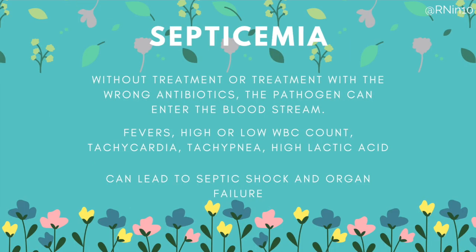Without treatment or with the wrong antibiotics, the infection will spread and can eventually enter the bloodstream. Once pathogens are in the bloodstream, they can go anywhere blood can go — literally your entire body. This leads to full-body manifestations like fever and chills, hemodynamic changes like tachycardia, and elevated white blood cell count, or in severe cases, low white blood cell counts. Bacteria in the blood can lead to septic shock and organ failure, where the inflammatory response goes into overdrive, and without aggressive treatment, many people die.